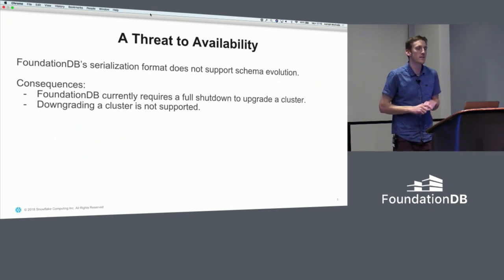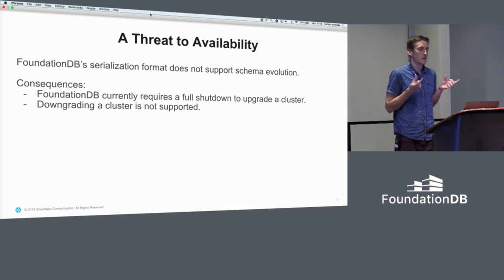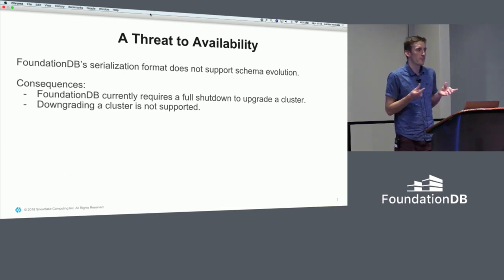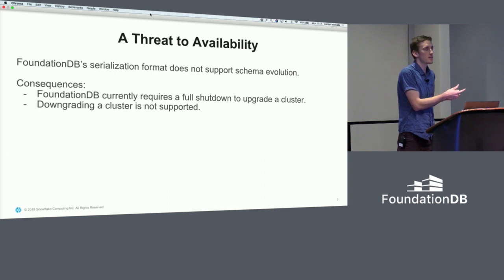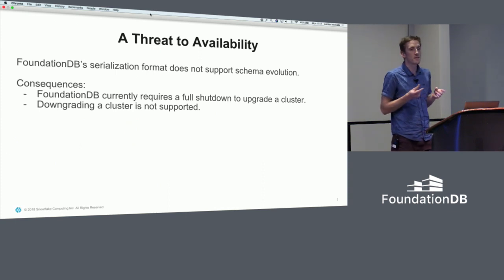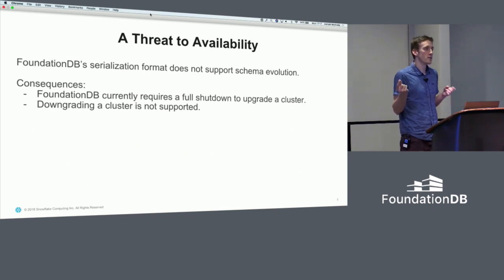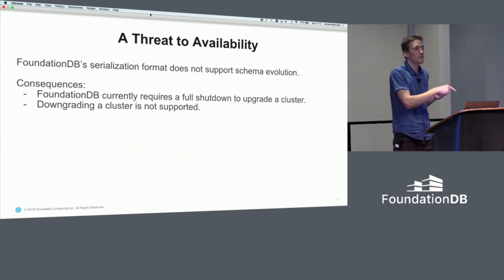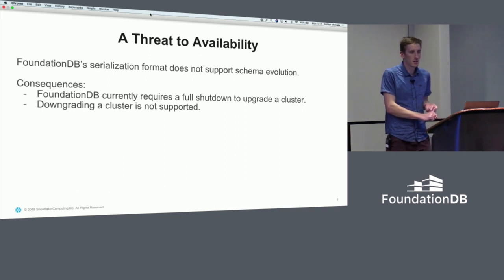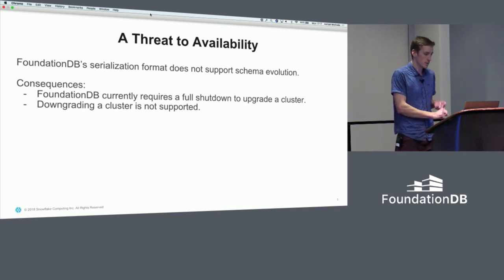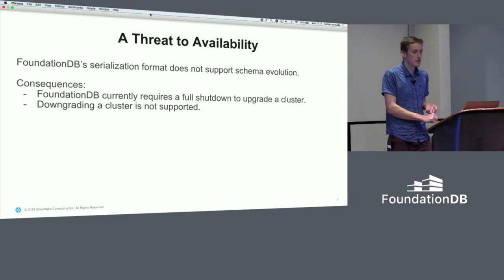Currently, two FoundationDB processes need to have the same protocol version to talk to each other. For introducing new protocol versions, this isn't such a big problem because you can have the new binary understand both protocol versions. But for downgrading back to the old binary, if something is written to a file with the new protocol version, the old binary won't be able to read it.